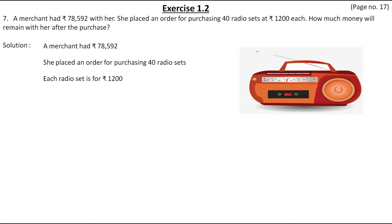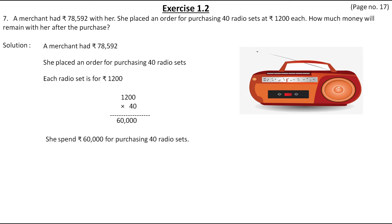How much money will remain with her after the purchase? First we will find out how much money she spent purchasing 40 radio sets. For that we have to multiply 1,200 by 40, which gives us the answer as 60,000. That means she spent rupees 60,000 for purchasing 40 radio sets.